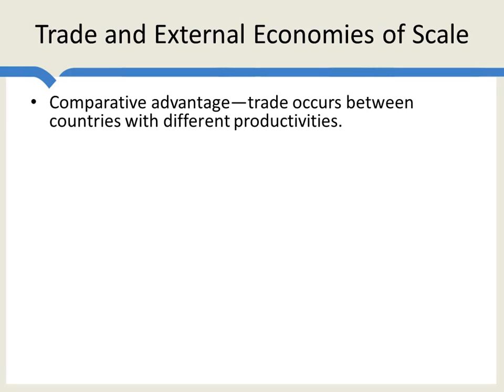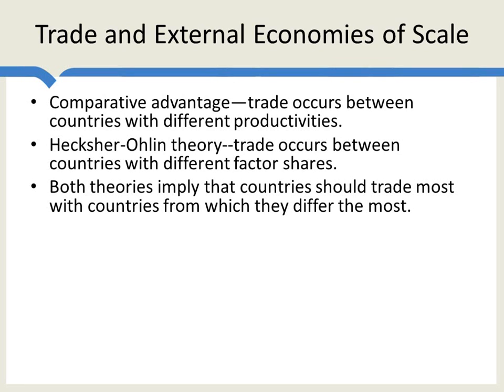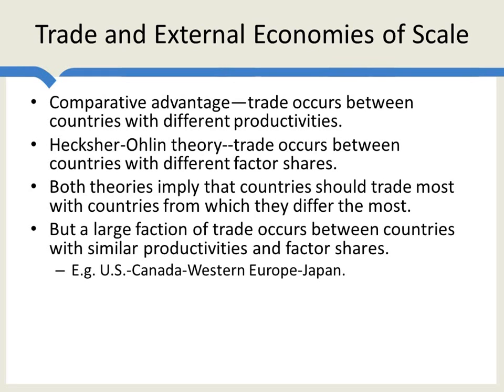We've already looked at a number of theories which implicitly make predictions about which countries should trade the most. Comparative advantage says trade ought to occur most between countries which have different levels of productivity. The Heckscher-Ohlin theory says that trade ought to occur the most between countries with different factor shares. So both of these theories imply that countries should trade the most with countries from which they are the most different. However, a large fraction of trade actually occurs between countries which are quite similar in productivity and in factor shares.